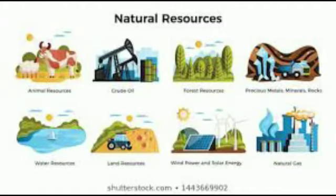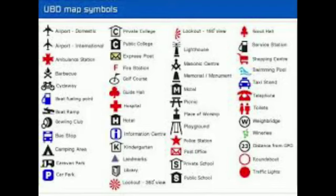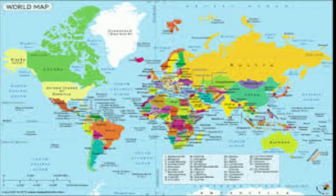While we study maps and symbols, we have to study sketches and maps. A smaller picture of a locality is called a sketch. Realistic pictures of trees, buildings, etc. are not shown in a map. Different symbols are used to show different objects in a sketch.